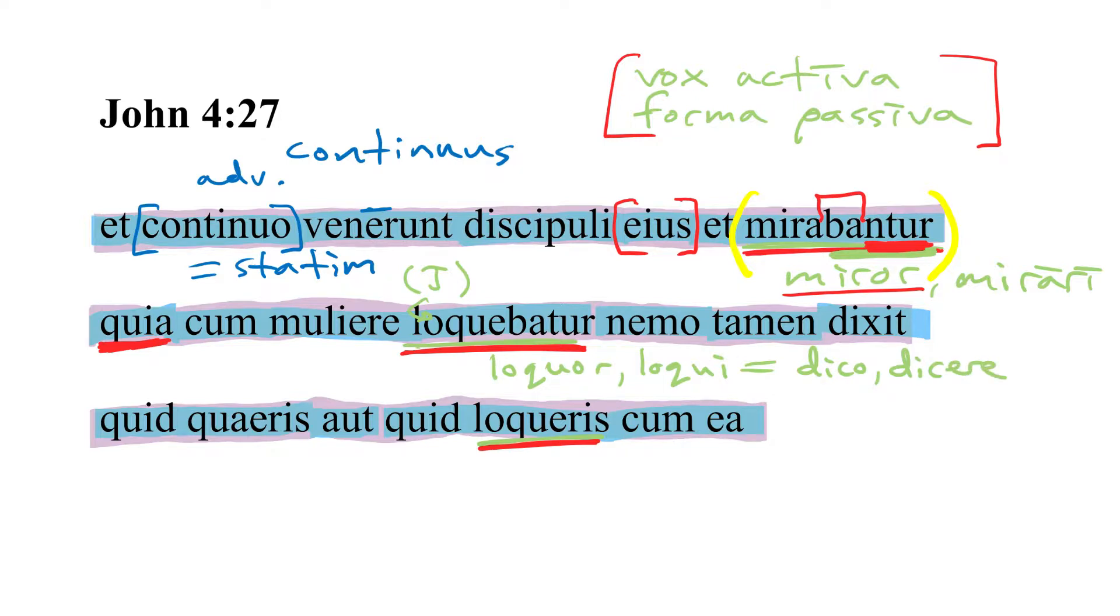Cum muliere loquebatur. They're amazed that Jesus was speaking, notice that ba again, and that's our imperfect tense. Jesus was speaking with the woman or with a woman, and here this is ablative following cum as we're used to seeing it.